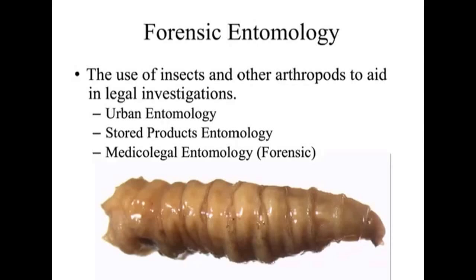There are three areas of entomology. There's urban entomology, stored products entomology, and medical legal entomology, which is a forensic branch. Urban entomology is the studying of insects and how they interact with humans. Stored products is how insects infest food products, which is a big area of study given the commercialization of food products.